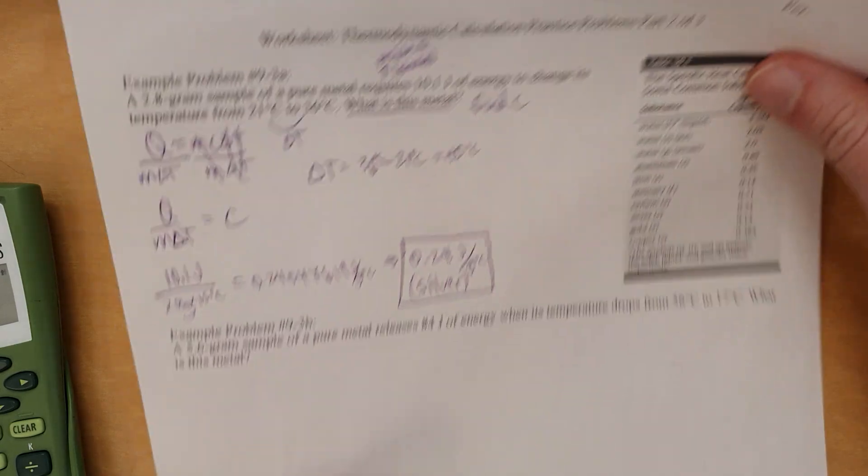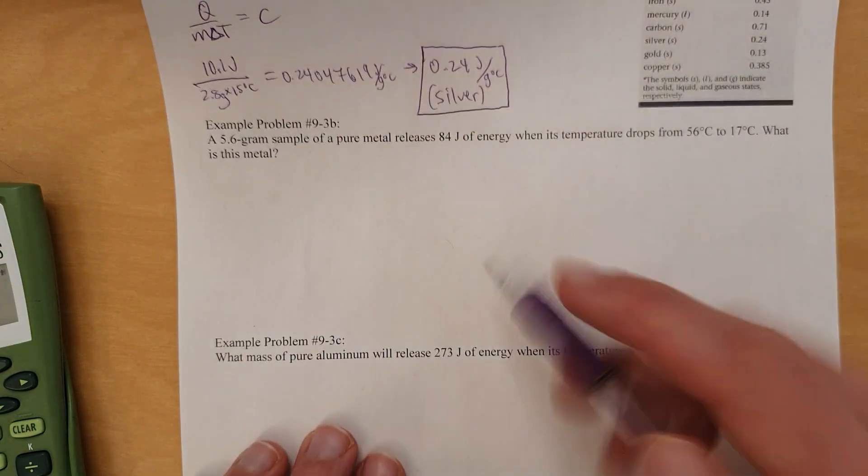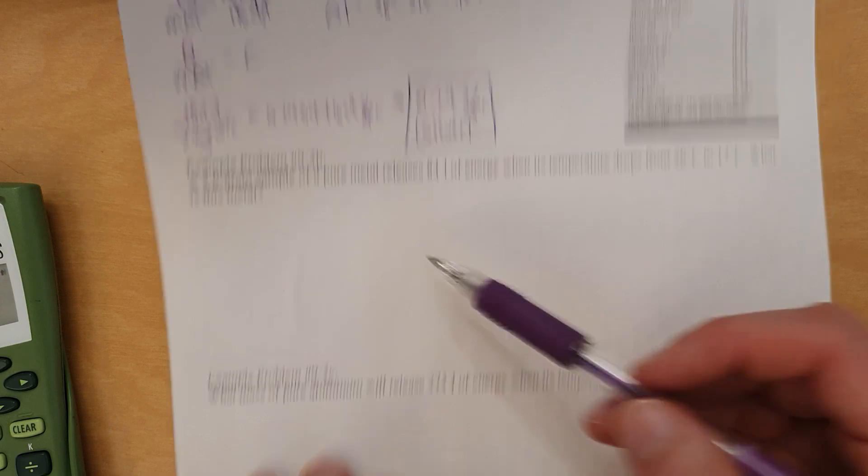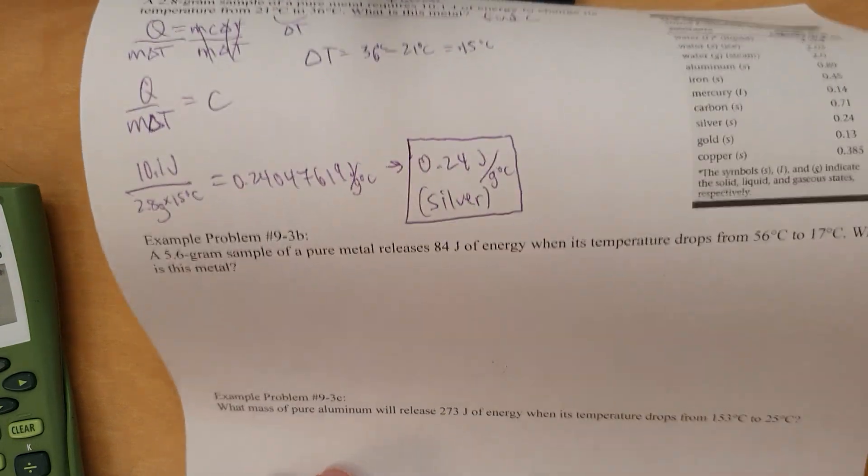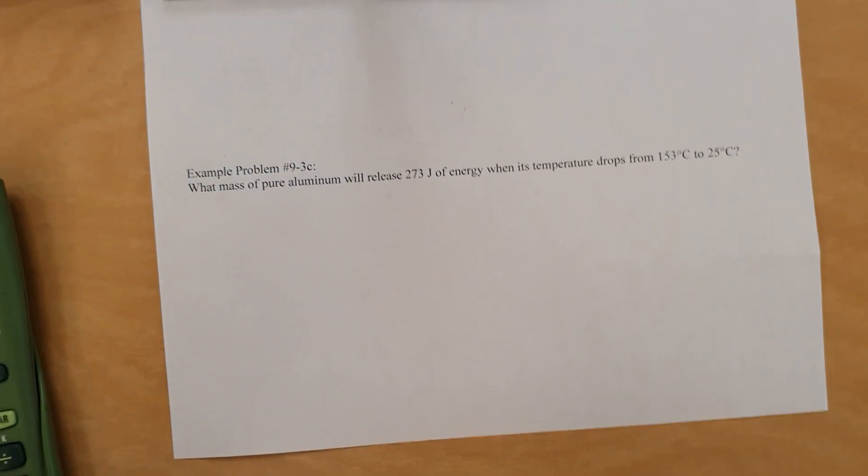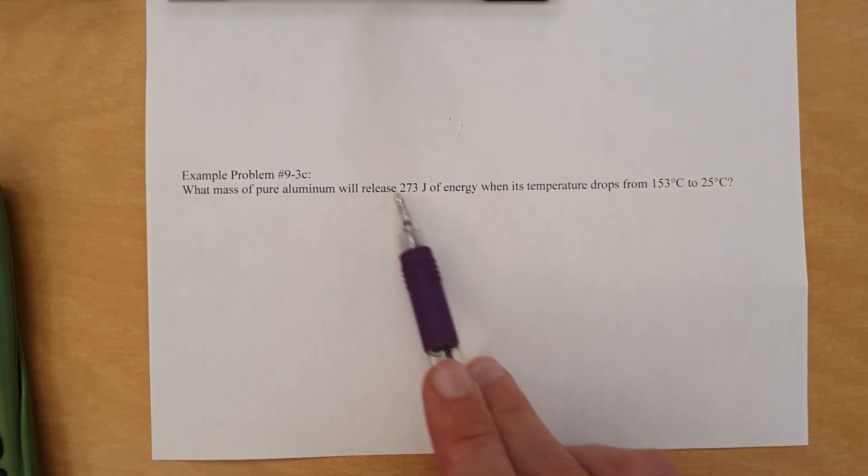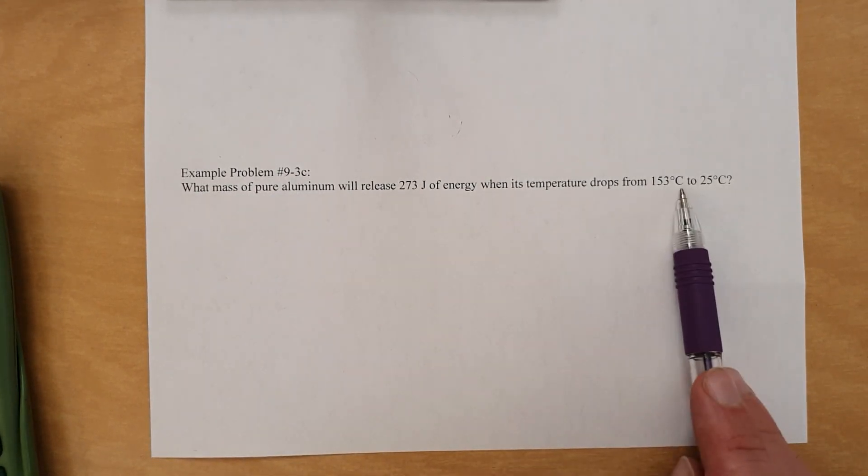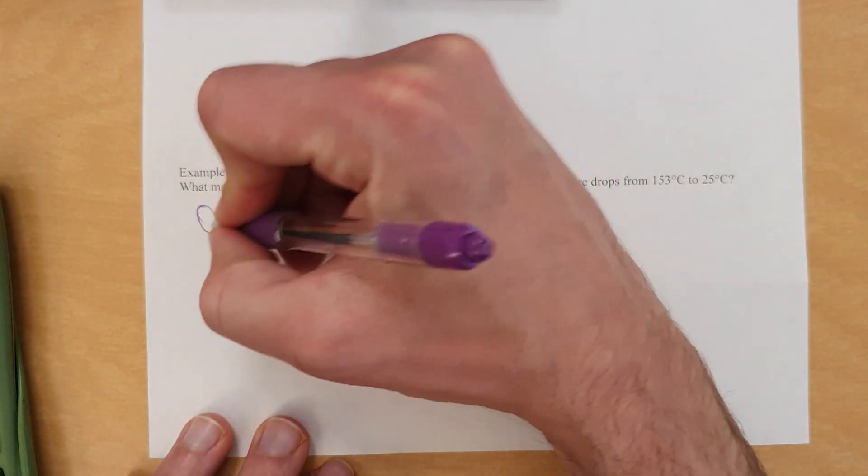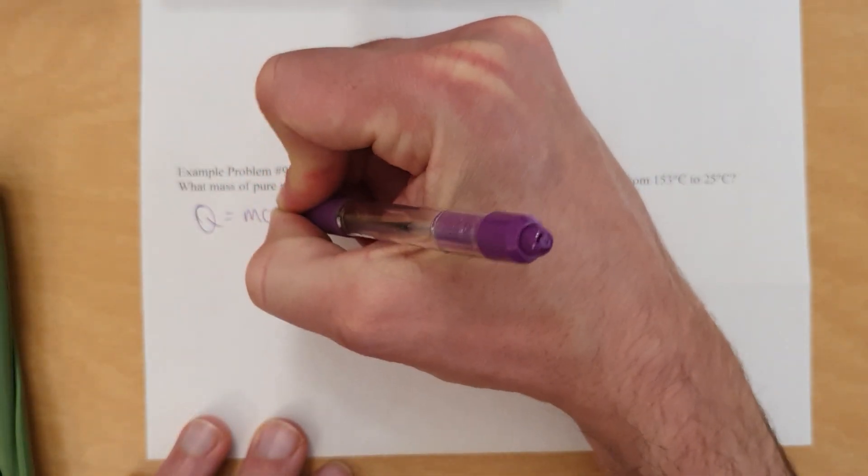Alright. Let's move along. Now this works a similar kind of way, so if you can do this, you can do this. Let me scoot this underneath the support so I can then work on the next one. This one. Mass of pure aluminum will release, okay, you got joules and change in temperature. So you know once again using Q equals mc delta T.